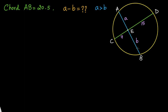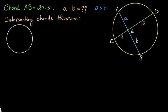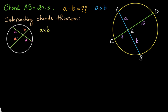So we have two intersecting chords, so we need to make use of the intersecting chord theorem. Suppose we have a circle where we have two chords — one chord and another chord intersecting it. We call this part as A and this part as B, and we call this part as C and this part as D. According to the intersecting chords theorem, A times B will be equal to C times D.